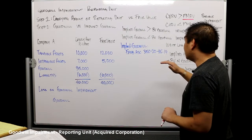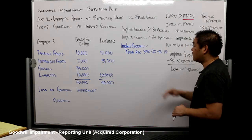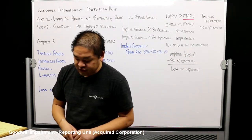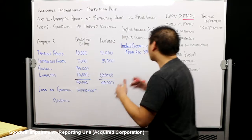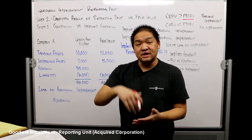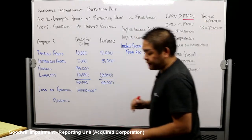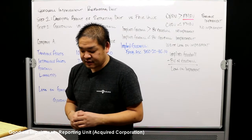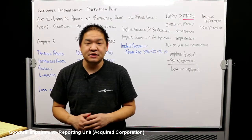We can look at FASB Accounting Standards Codification 350-20-35-14 for the definition of implied goodwill. It tells us that the implied fair value of goodwill shall be determined in the same manner as the amount of goodwill recognized in a business combination. An entity shall assign the fair value of a reporting unit to all of the assets and liabilities of the unit, including any unrecognized intangible assets, as if the reporting unit had been acquired in a business combination today.